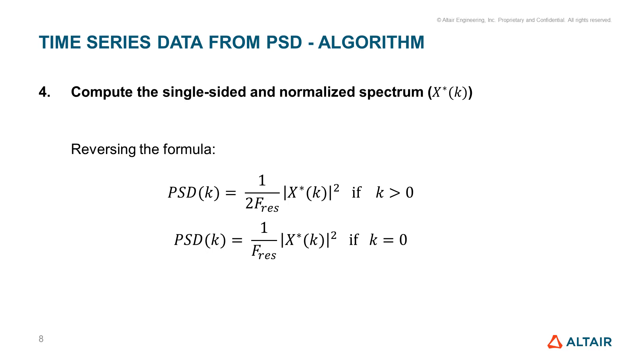The fourth step is to compute the single-sided and normalized amplitude of the discrete Fourier transform. To do that, we can leverage the inverse of this formula.